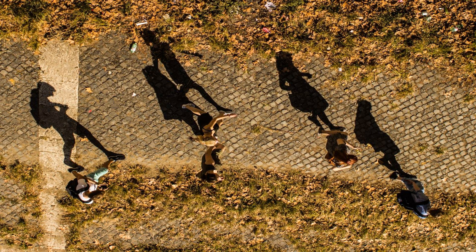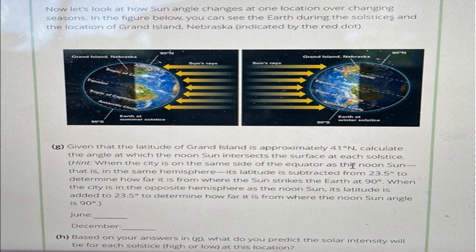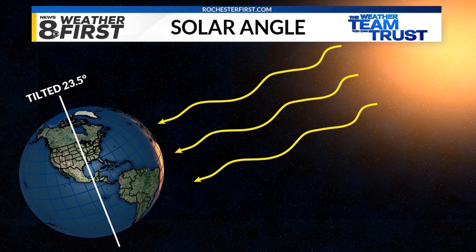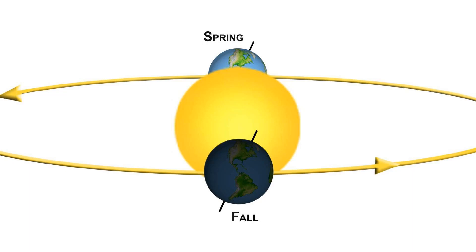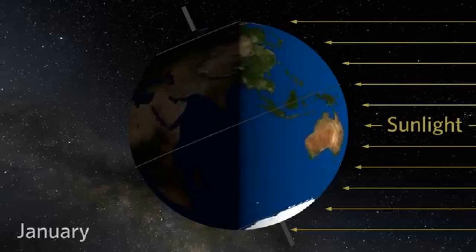As the Earth orbits the sun and its axial tilt remains constant, the angles at which sunlight reaches different parts of the Earth's surface change throughout the year. When sunlight arrives at a more direct angle, it covers a smaller area, resulting in concentrated heating and higher temperatures. Conversely, when sunlight arrives at a shallower angle, it covers a larger area, leading to more spread-out heating and lower temperatures. These changing angles of sunlight influence the temperature distribution on Earth's surface and contribute to the unique climate patterns and seasons we observe.